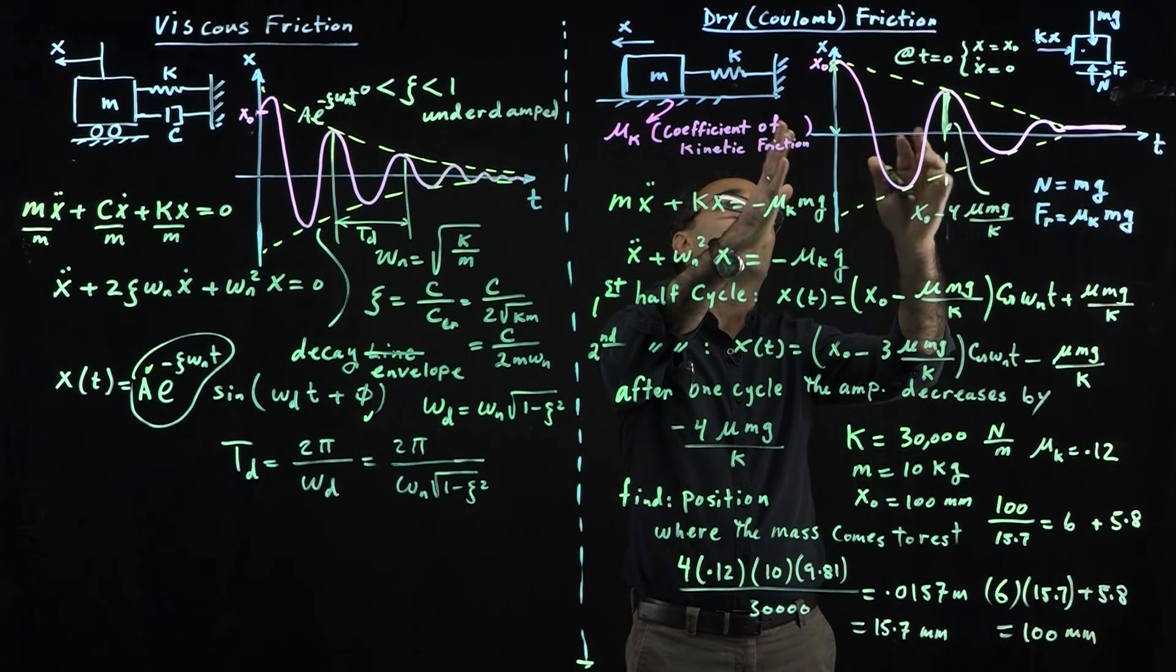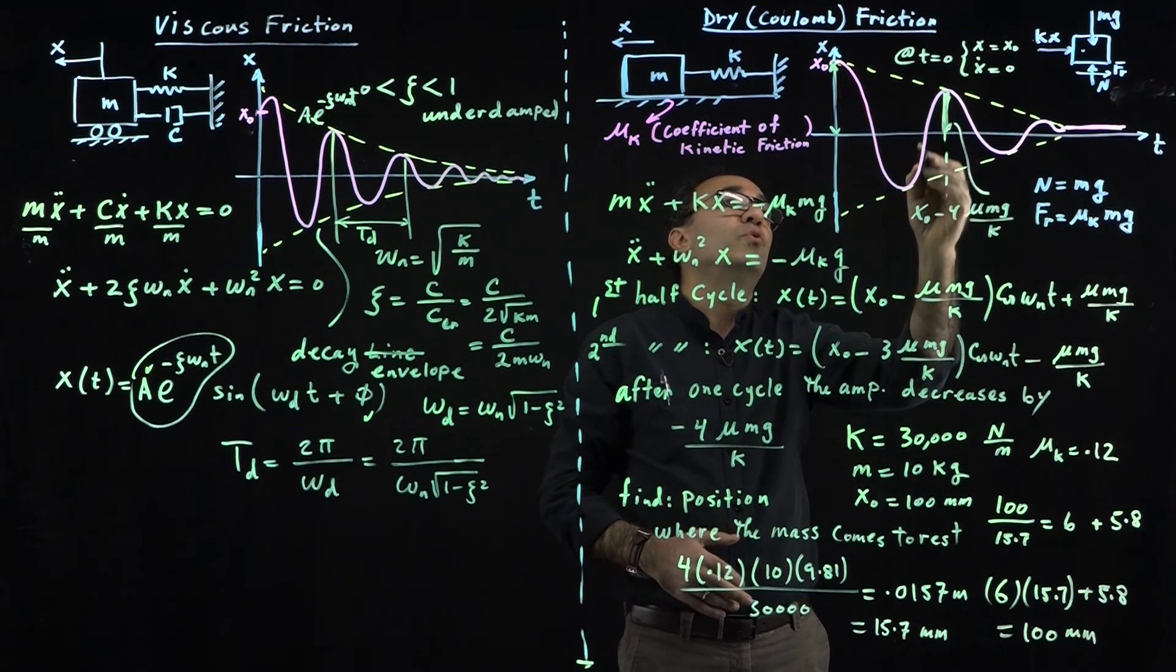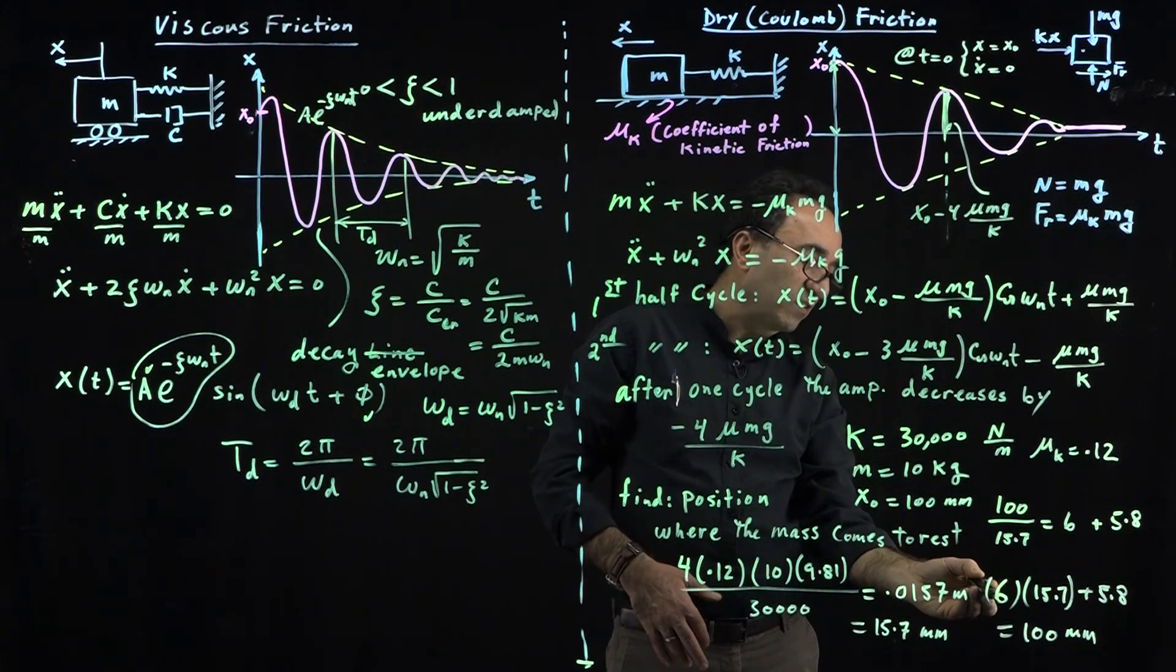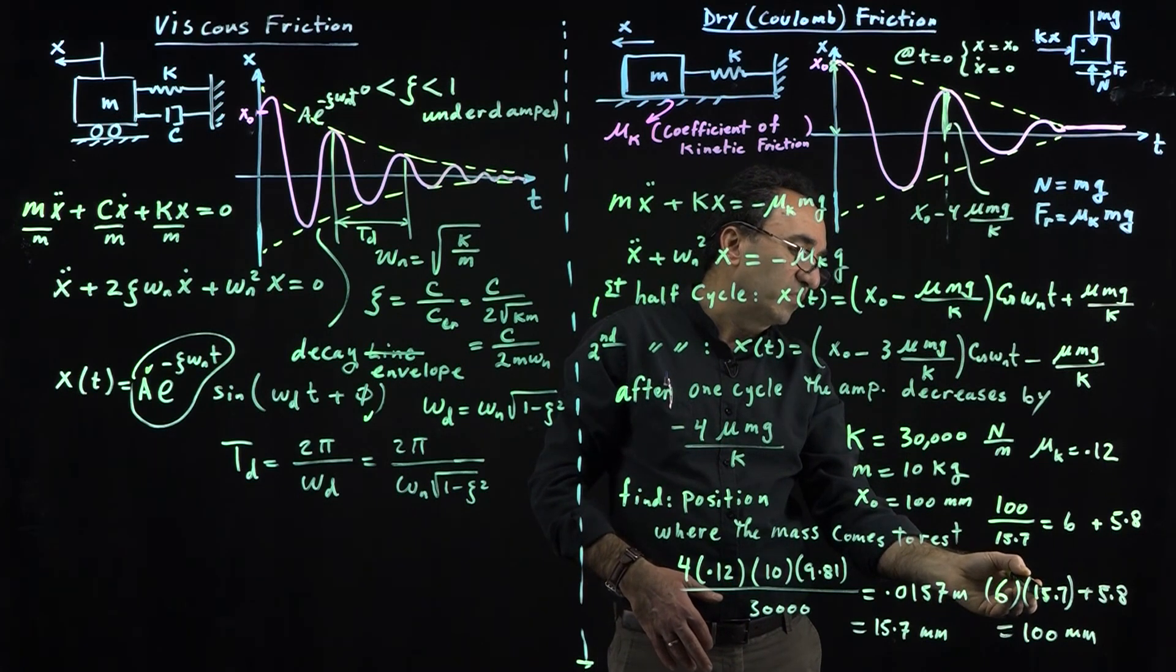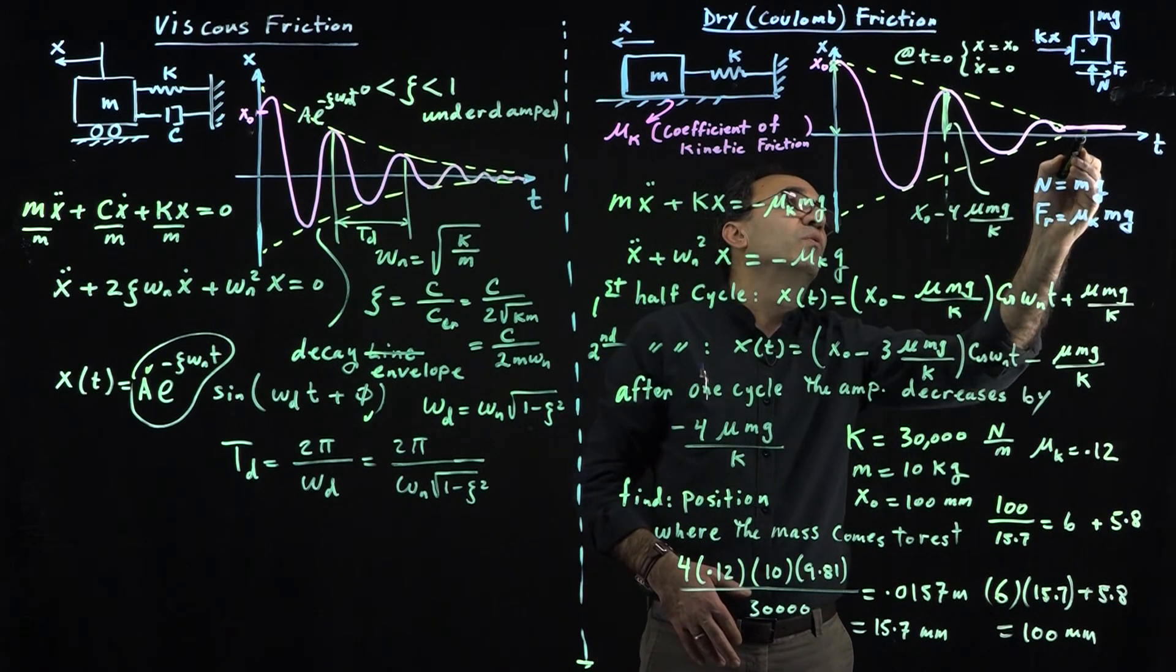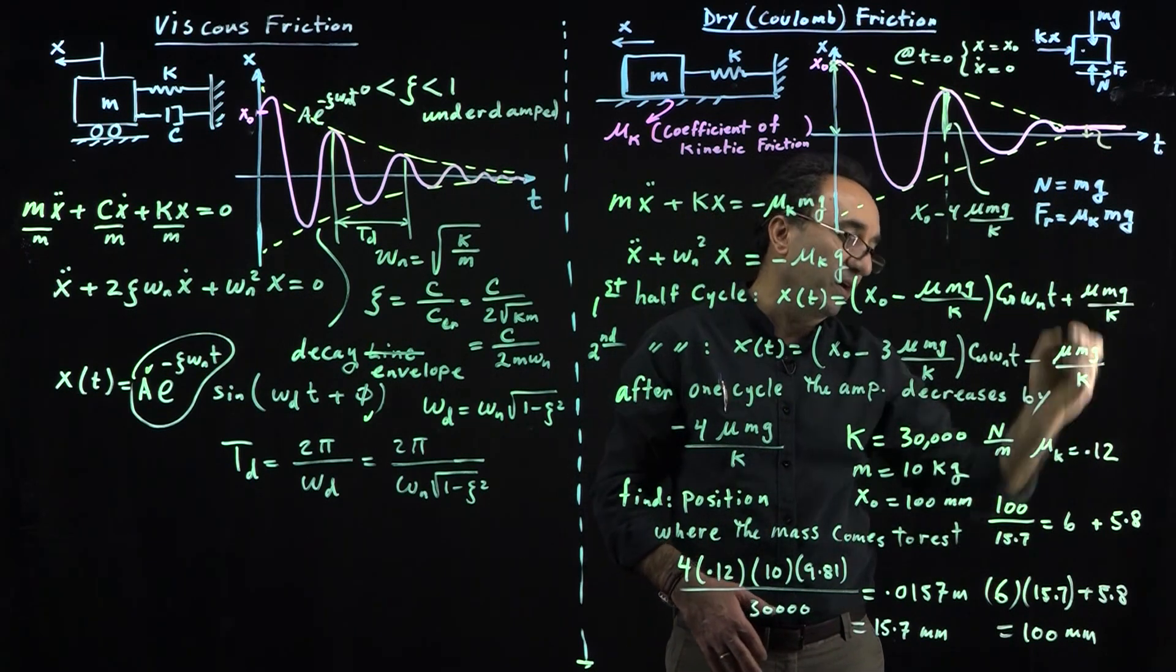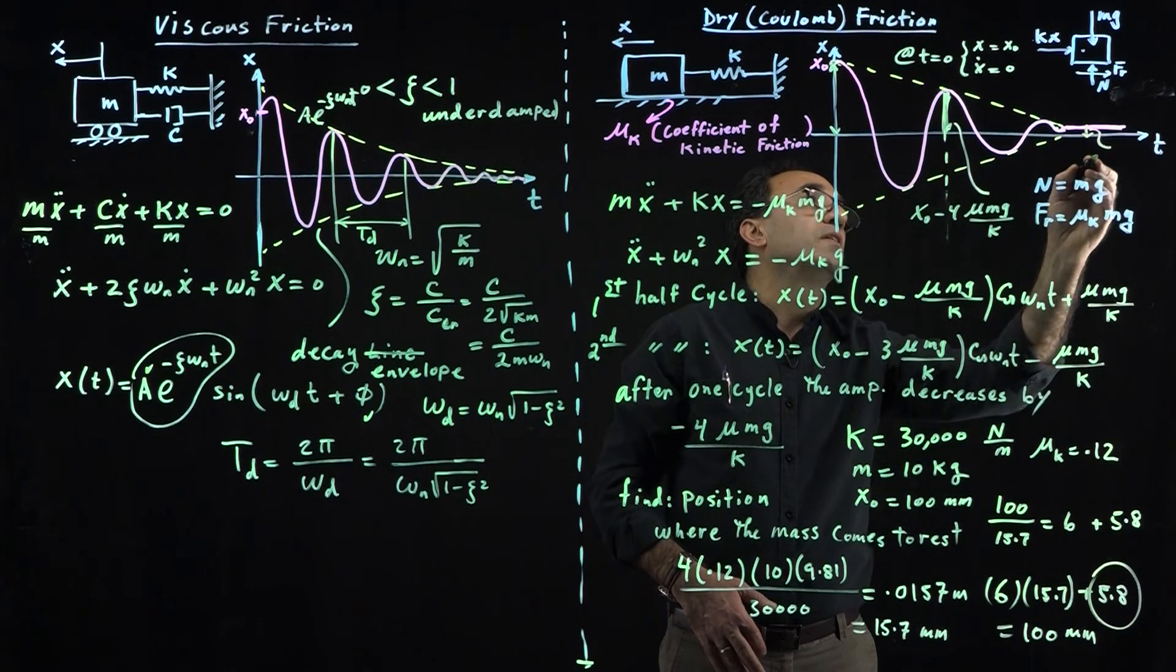Basically, what this says—and this picture doesn't follow that actually—this will go through six cycles, six cycles of reduction of 15.7, and then eventually it will come to rest at what position? At the position of 5.8 millimeters.